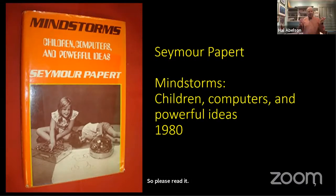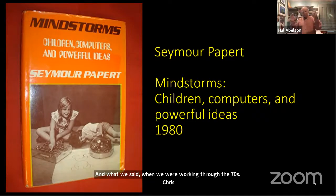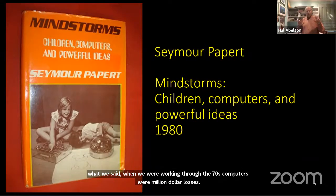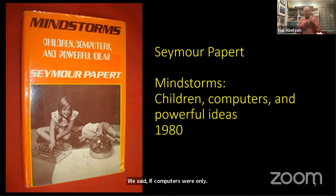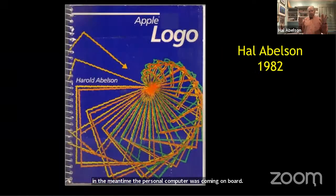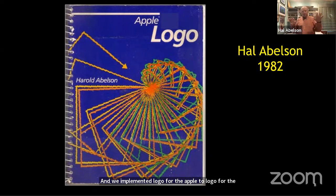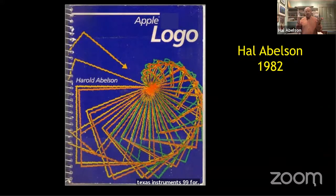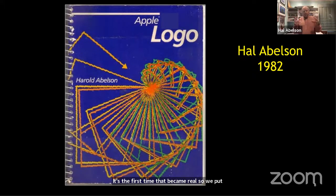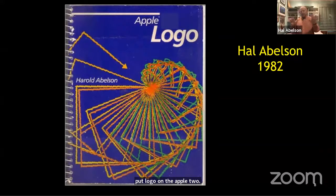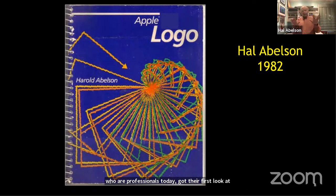When we were working through the 70s — computers were a million-dollar class of machine — we said if computers were only ten thousand dollars that would change education. You see how naive we were. But in the meantime the personal computer was coming on board. We implemented Logo for the Apple II and for the Texas Instruments 99/4, and it was the first time kids could get individual access to computers. Many professionals today got their first look at computing from Logo on the Apple II — something we're very proud of at MIT.